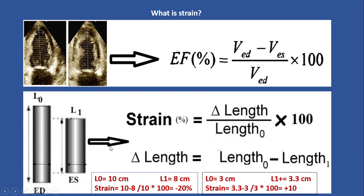Here is another example. Imagine this segment at end-diastole is 3 cm, and at end-systole it becomes 3.3 cm. The longitudinal strain would be: 3.3 minus 3, divided by 3, multiplied by 100 — which is approximately 10%. Since the length has increased, the unit will be positive because it corresponds with the definition of strain. So we have positive 10% strain in that case.